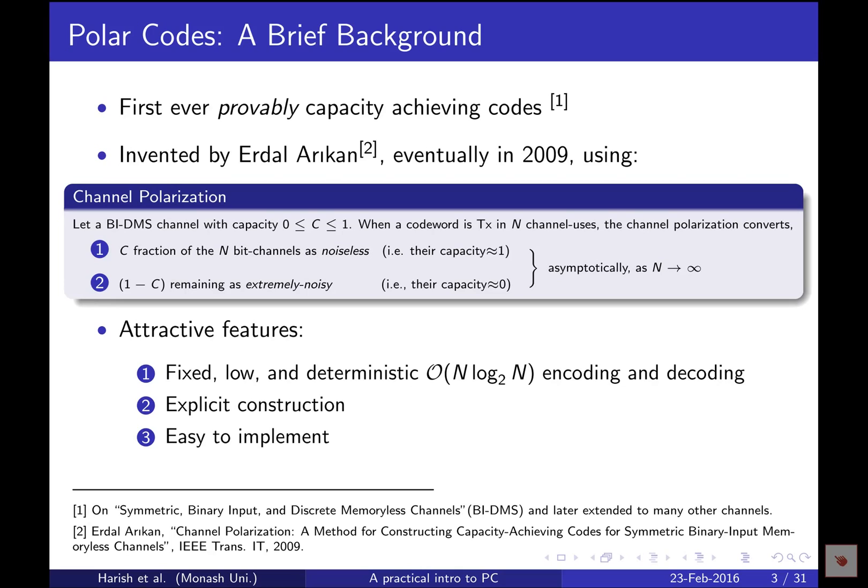Polar codes are the first provably capacity-achieving codes. The term 'capacity achieving' is a key distinction: prior codes in the literature were known to approach capacity in practice — their simulated performance was impressively close — but there was no mathematical proof that they actually achieved capacity asymptotically. Polar codes are the first capacity-achieving codes in that strict mathematical sense.